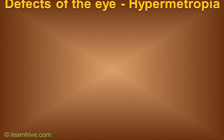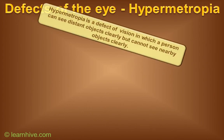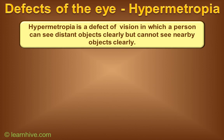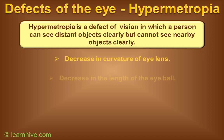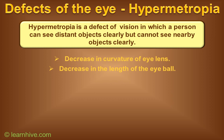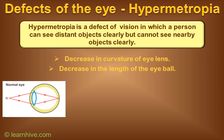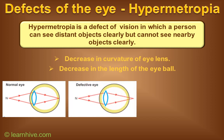Defects of the eye — hypermetropia. Hypermetropia is also known as long-sightedness. Hypermetropia is a defect of vision in which a person can see distant objects clearly but cannot see nearby objects clearly. Hypermetropia can arise due to the following reasons: 1. Decrease in curvature of the eye lens. 2. Decrease in the length of the eyeball. For a normal eye, the image is always formed on the retina. But for a person suffering from hypermetropia, the image is formed after the retina, so the far point of the eye increases and they are unable to see clearly.